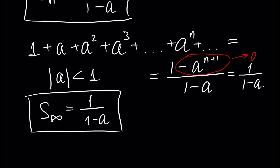Sometimes in our geometric progression the first element is not 1, but some number b. In that case, in our formula, we have a factor of b, and everything else remains the same.